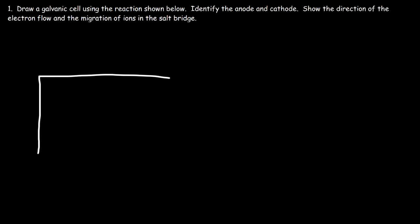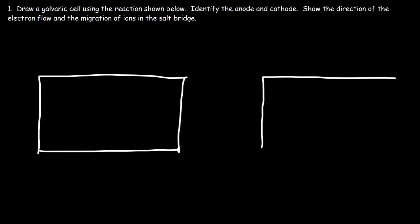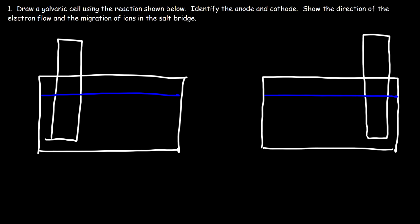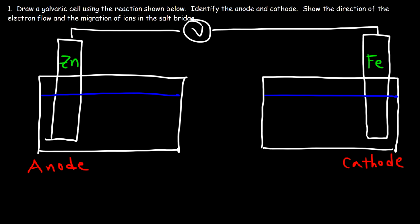We need two compartments — basically two beakers — and we place an electrode inside each beaker, filling them with solution. I like to put the anode on the left side and the cathode on the right side. So the anode is the zinc electrode and the cathode is the iron electrode. We use a wire attached to a voltmeter. Electrons will always flow from the anode to the cathode — that's the rule.